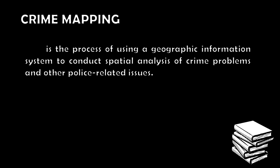Next is Crime Mapping. It is the process of using a geographic information system to conduct spatial analysis of crime problems and other police-related issues. Through Crime Mapping, law enforcement authorities can better analyze how to solve crime problems and develop crime prevention programs and measures to prevent the occurrence of crime. Crime Spot Map and Traffic Spot Map are types of crime mapping. If a certain location is identified as crime-prone, authorities can implement high police visibility by deploying more police officers to prevent or deter would-be criminals.